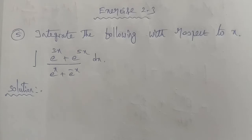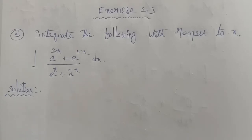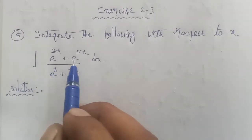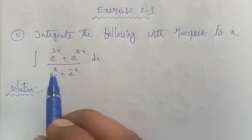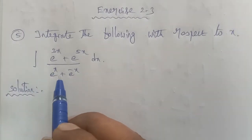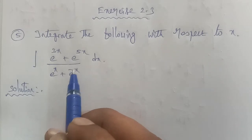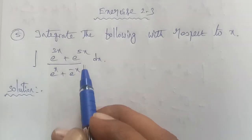Hi students, I am Gopinath. 12th business maths, exercise 2.3, question number 5: integrate the following with respect to x — integral of (e power 3x plus e power 5x) divided by (e power x plus e power minus x), into dx.